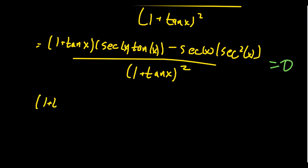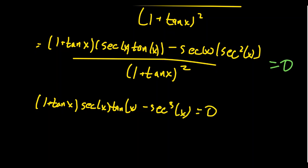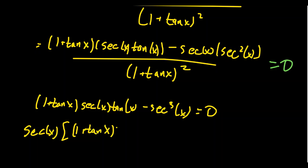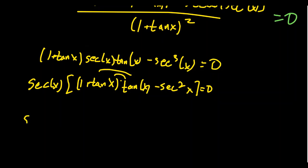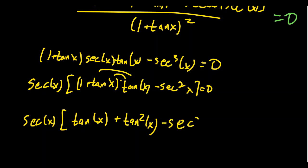We end up with (1 + tangent x) times secant tangent minus secant cubed of x equals zero. We need to factor this to figure out when it's zero. We can factor out the common factor of secant, which leaves behind (1 + tangent of x) times tangent of x minus secant squared. Distributing the tangent gives us secant of x times (tangent of x + tangent squared of x minus secant squared of x) equals zero.